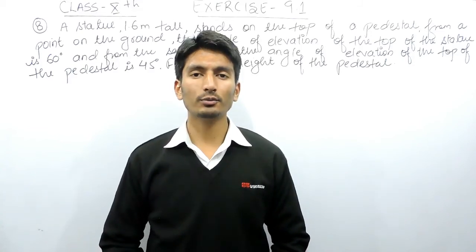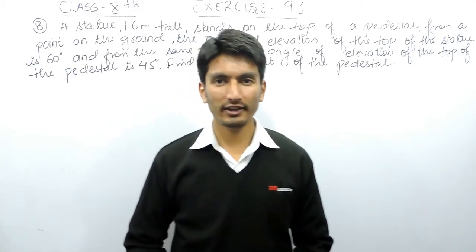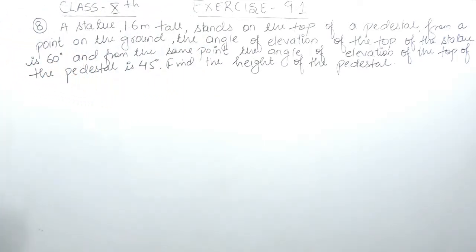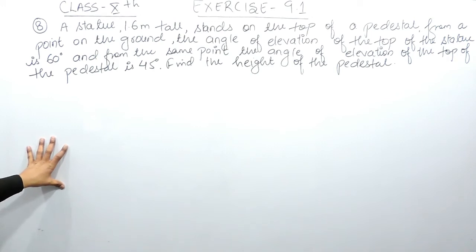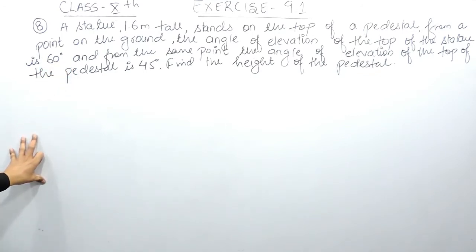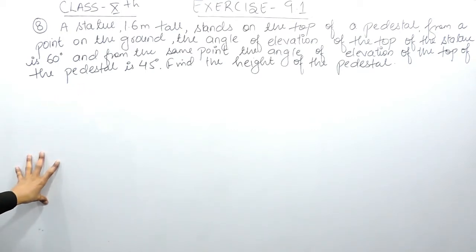Hello everyone, we are from True Maths and in this video we are going to solve question number 8 of exercise 9.1. The question says: a statue 1.6 meter tall stands on the top of a pedestal. From a point on the ground, the angle of elevation of the top of the statue is 60 degrees, and from the same point the angle of elevation of the top of the pedestal is 45 degrees. You have to find the height of the pedestal.